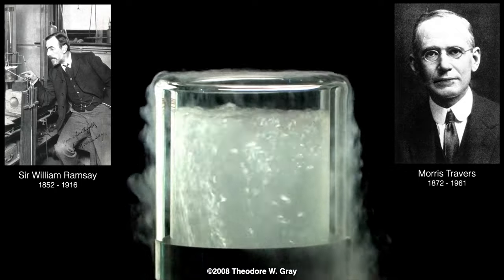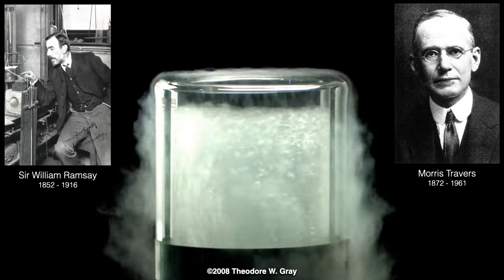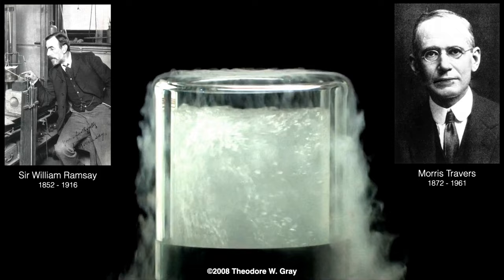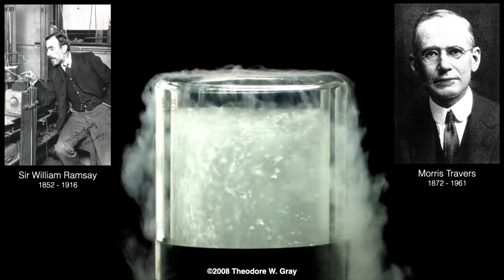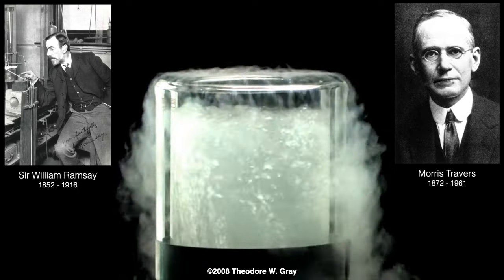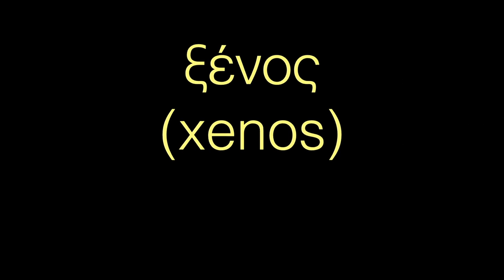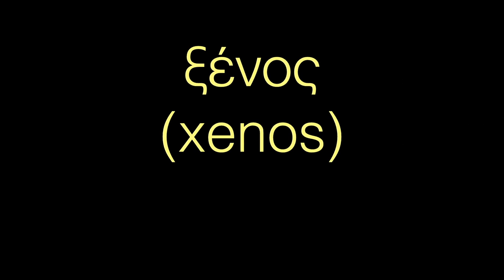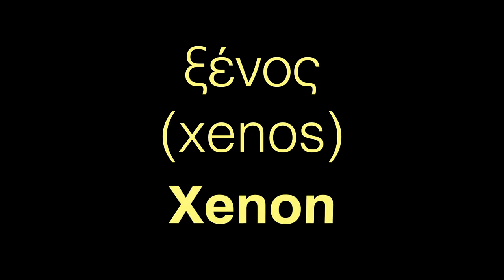Sir William Ramsey was awarded the 1904 Nobel Prize in Chemistry for discovery of a series of noble gases, including xenon. Ramsey gave us the name for this element from the Greek xenos, meaning foreign, strange, or stranger. We get our modern name, xenon.